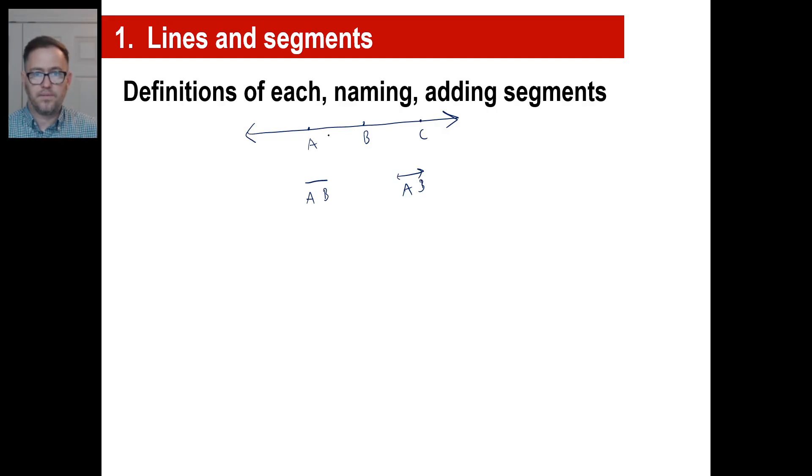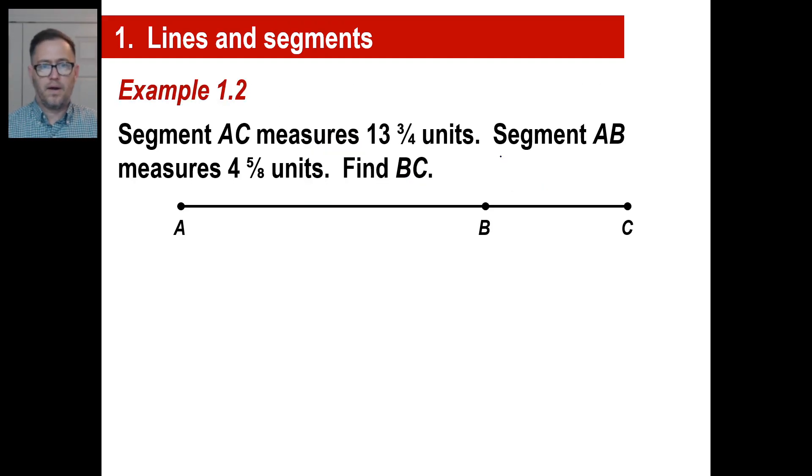If you had, let's say, let's say AB is 7 and 1 third, and then BC is 8 and 2 fifths, well, then they would say, what is line AC? They'd say, what is line segment AC going to be? And you would just add those two together. That's all you need to do. Okay.